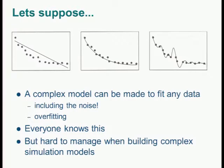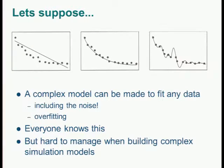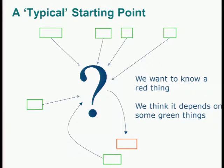A complex model can be made to fit any data, including the noise. This is often referred to as over-fitting or over-parameterization, and everybody in science knows this. It's very hard to manage when you're building complex simulation models of Earth systems. For quite a few years I've been involved in making models of all sorts of different systems, merrily making them more and more sophisticated — until eventually you realize you're using a model that's over-fitted. So I've become interested in trying to understand where on this axis of enthusiasm to stop.